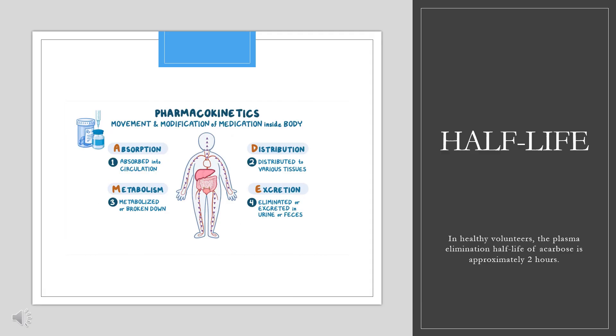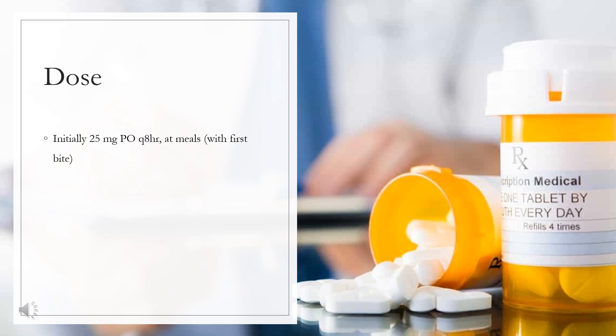Half-life. In healthy volunteers, the plasma elimination half-life of acarbose is approximately 2 hours. Dose. Type 2 diabetes mellitus. Initially, 25 mg PO Q8HR at meals, with first bite. Can increase to 50 or 100 mg PO Q8HR at 4 to 8 week intervals, based on 1-hour postprandial glucose or glycosylated hemoglobin levels, and on tolerance.